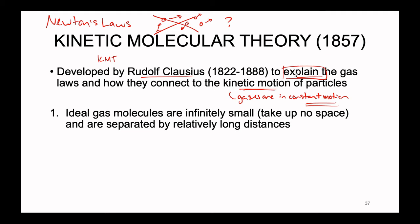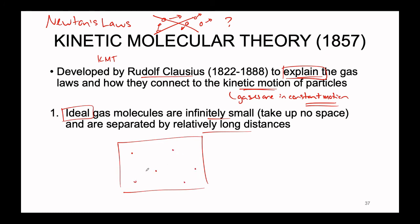Point one: ideal gas molecules are infinitely small — they take up no space of their own — and are separated by relatively long distances. These are definitions for ideal gases, not real gases. Real gases obviously take up their own space. But for small molecules like nitrogen, oxygen, and carbon dioxide, we can assume the size of these particles does not matter, treating them as point particles. These point particles are separated by long distances, implying no attraction, repulsion, or interaction — which is what defines a gas relative to liquids and solids.